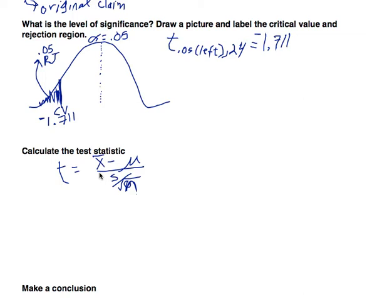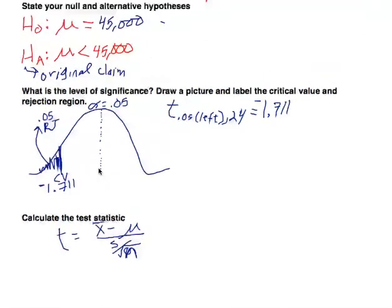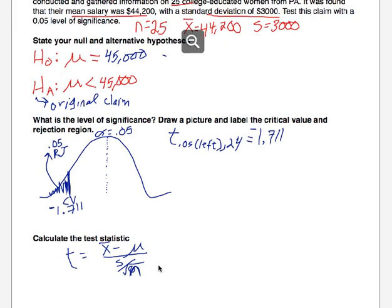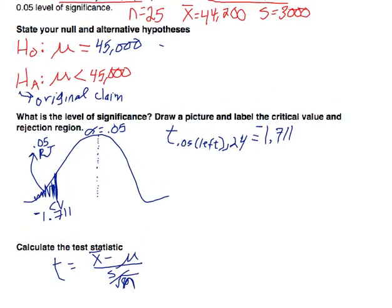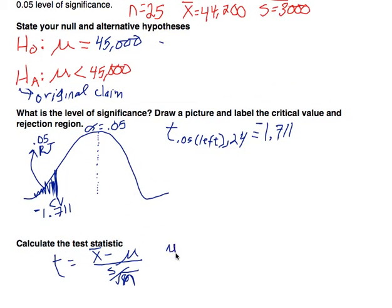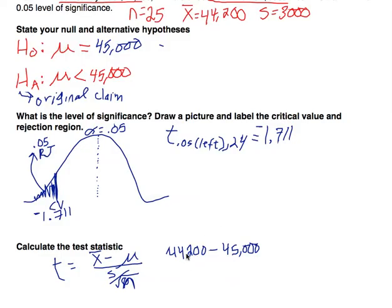So we have x̄, our sample mean — everything in red is associated with our sample. That's $44,200 minus the hypothesized mean of $45,000. I already know I'm on the right track because this number is going to be negative, and my critical value is negative — so my test statistic should be negative too. Then we divide by 3,000 (our sample standard deviation) divided by the square root of 25.